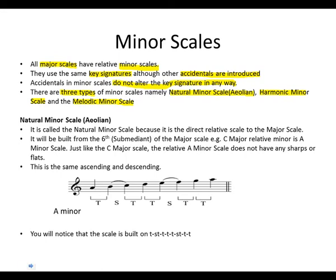Let us look at the natural minor scale. It is called the natural minor scale because it is the direct relative scale to the major scale. It will be built on the sixth, which is the submediant of the major scale. For example, C major's relative minor is the A minor scale. And just like the C major, the relative A minor scale does not have any sharps or flats. This scale is the same ascending and descending, from one until eight and also from eight until one.